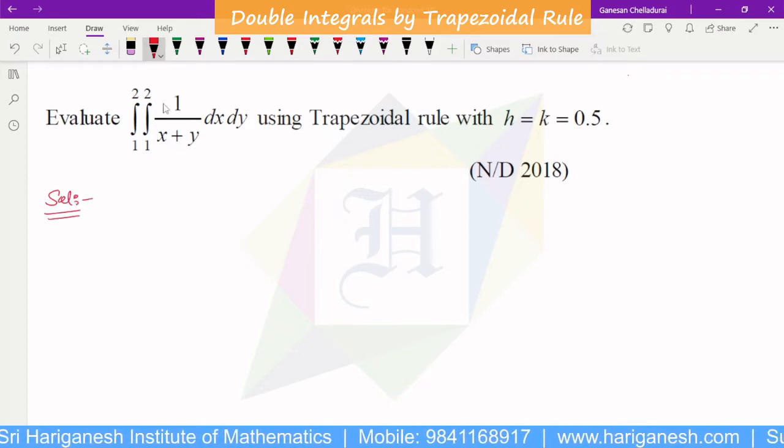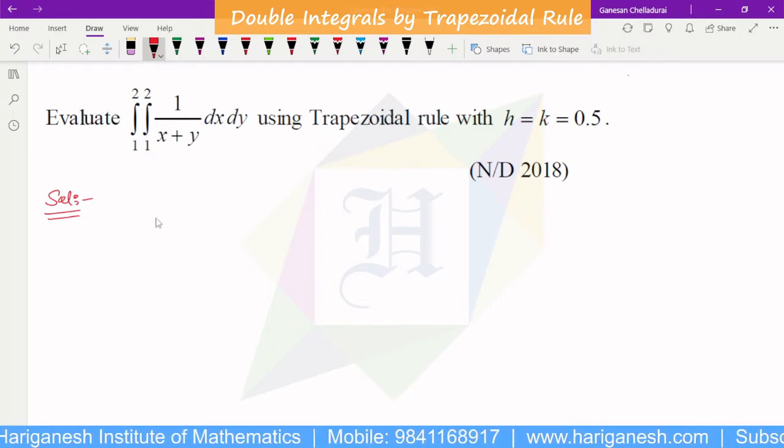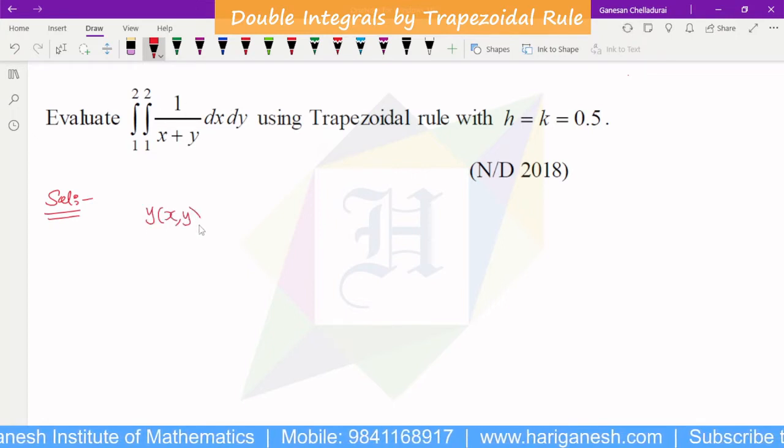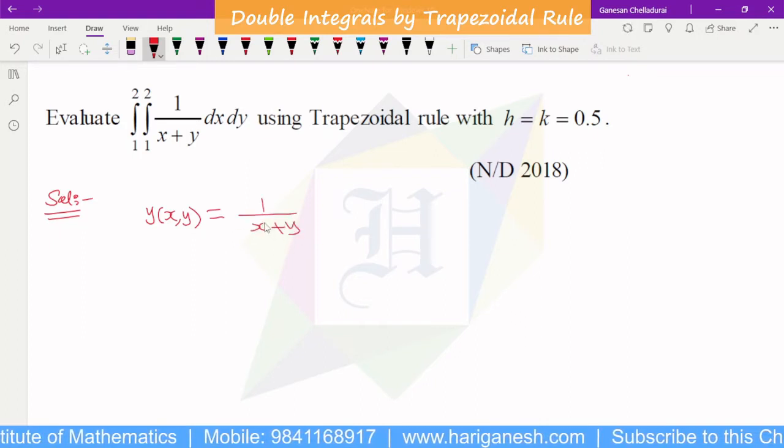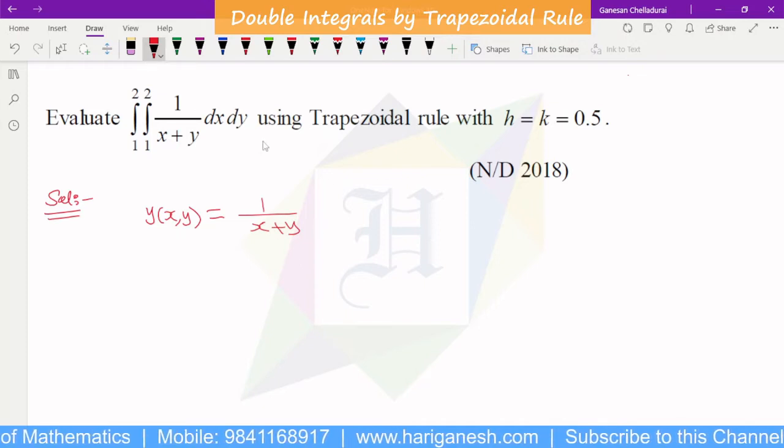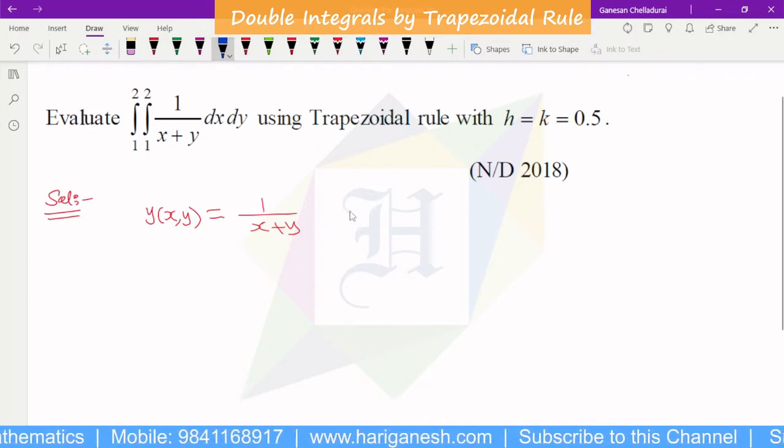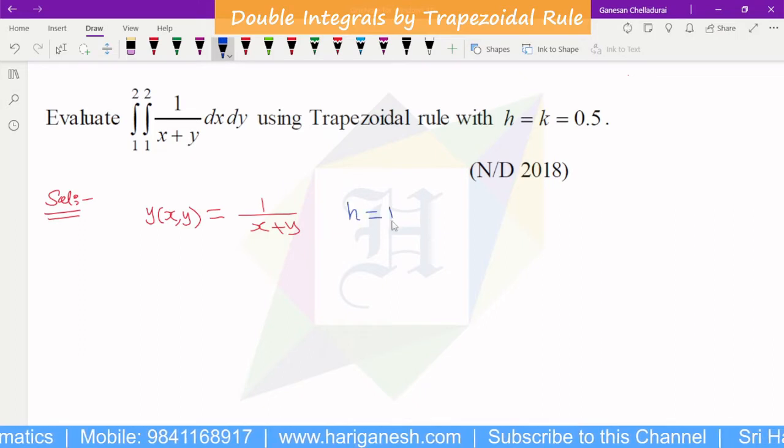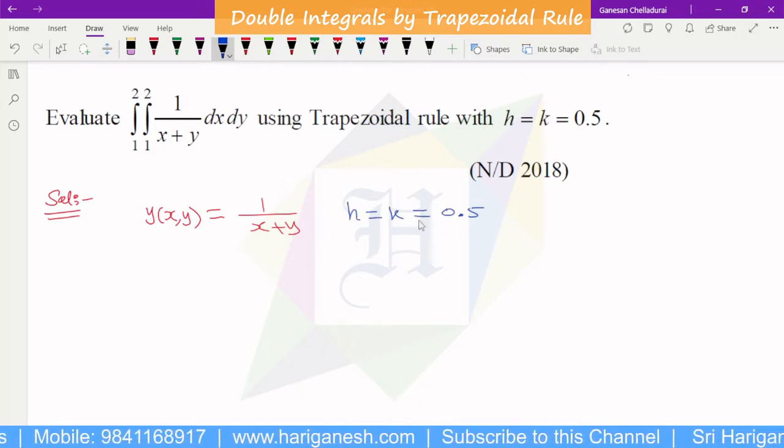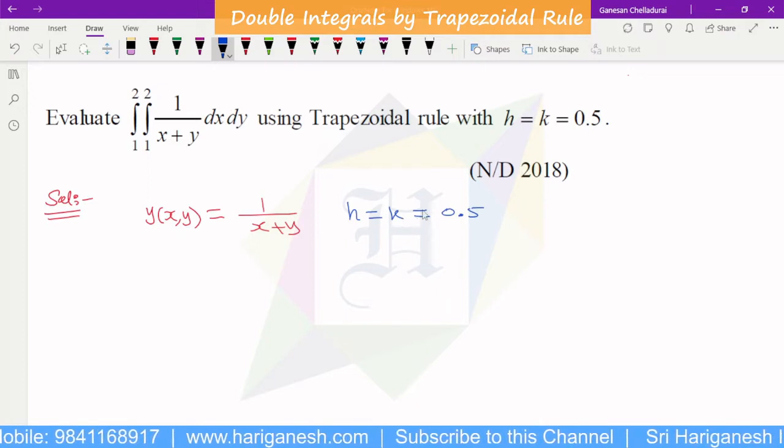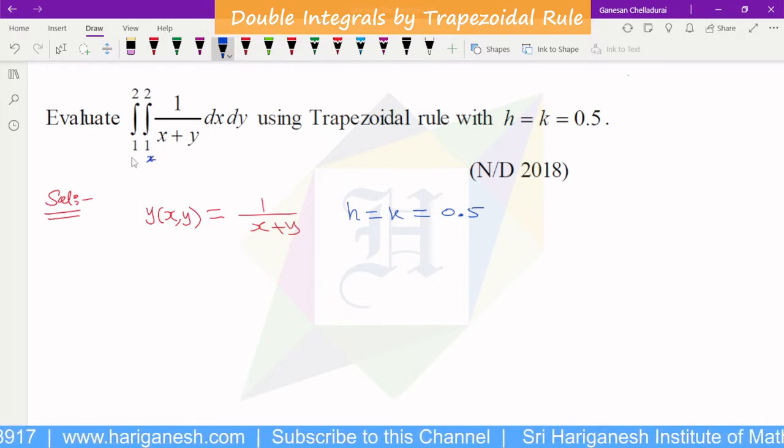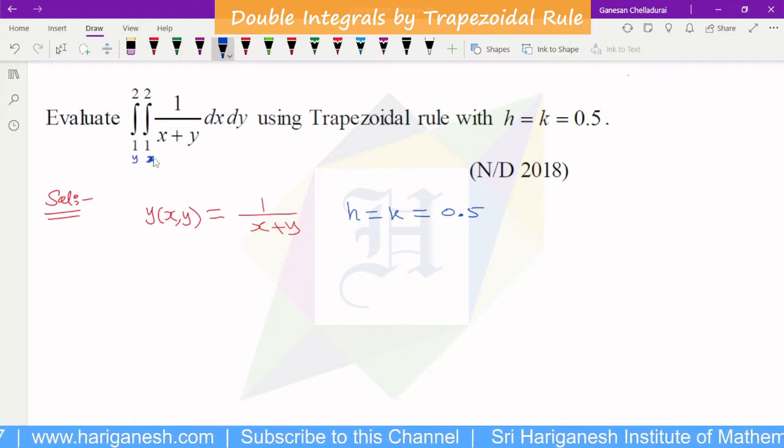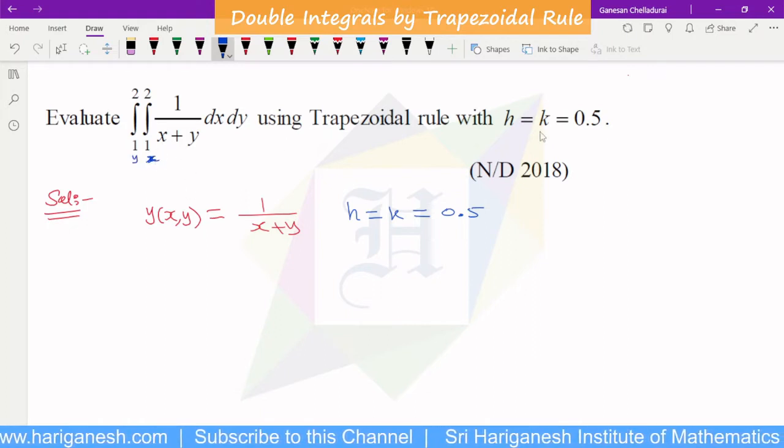You can take it as y of x, y. y of x is given by 1 by x plus y. Now, h, k is equal to 0.5. H is equal to 0.5, k is equal to 0.5. And x is equal to 0.5, y is equal to 0.5.